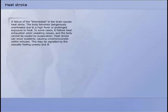A failure of the thermostat in the brain causes heat stroke. The body becomes dangerously overheated due to a high fever or prolonged exposure to heat. In some cases it follows heat exhaustion when sweating ceases and the body cannot be cooled by evaporation. Heat stroke can occur suddenly causing unconsciousness within minutes. This may be signalled by the casualty feeling uneasy and ill.